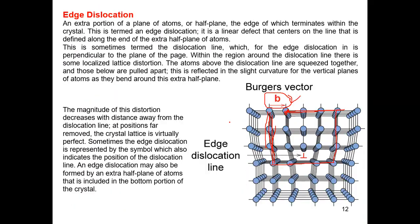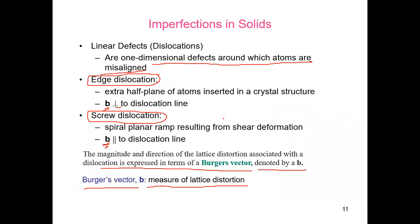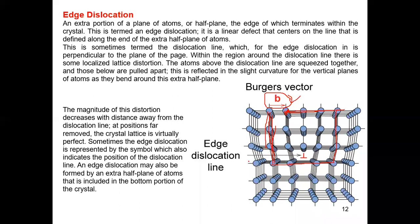This is the edge dislocation line. There is a particular portion of the plane of atoms — a half plane of the edge — that terminates within the crystal. This plane will slip.